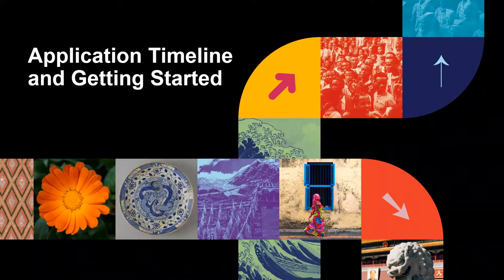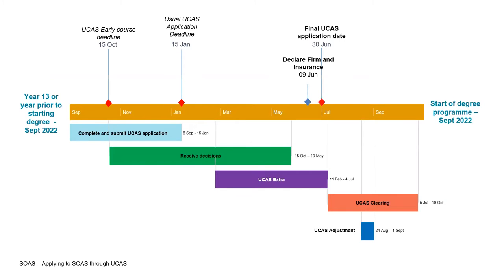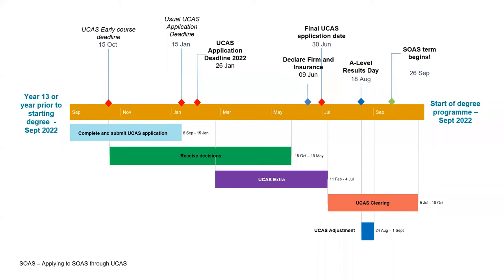In terms of the application timeline, there are quite a few different deadlines. The early course deadline for medicine, veterinary science, dentistry, Oxford and Cambridge is the 15th of October. The usual UCAS application deadline is the 15th of January, though this was pushed back this year to the 26th of January. You can also make applications up to the 30th of June, so the final UCAS application date is the 30th of June.